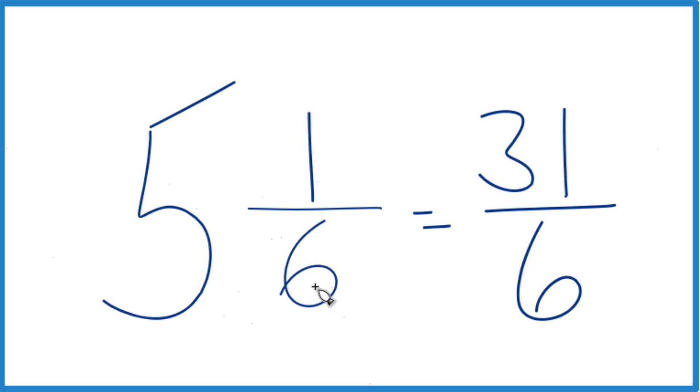Let's do it again. 5 times 6 is 30. 30 plus 1, that gives us the 31, our numerator. Bring the denominator across, and you're done.